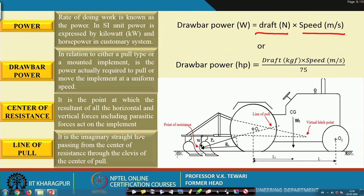The line of pull is an imaginary straight line passing through the center of resistance and the point at which the implement is hitched. The center of resistance is the point at which the total weight of the implement, the horizontal and vertical forces including parasitic forces, are all concentrated. Joining these two points gives the line of pull.